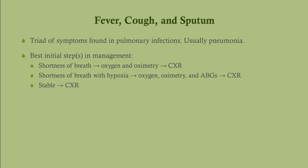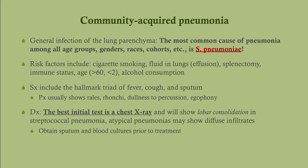If they're short of breath with signs of hypoxia such as cyanosis, do oxygen and oximetry and get arterial blood gases — we always get ABGs when a patient has symptoms of hypoxia — then get the chest x-ray. If the patient is stable with just fever, cough, and sputum, go ahead and start with the chest x-ray. The chest x-ray is the best initial diagnostic test, but that doesn't mean it's the best initial step in management. This sequence is really important, especially for Step 3 CCS.